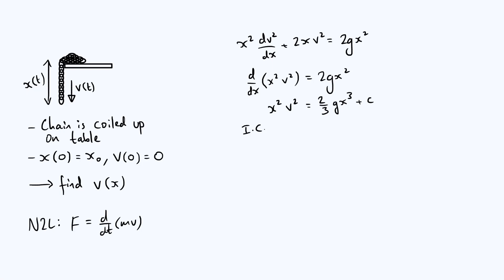At this point we can apply our initial conditions, so we know that v is zero when t is zero, but also x is x₀ when t is zero. And combining those two initial conditions in terms of time together tells you that v is zero when x is x₀. So the left hand side is going to be x₀² times 0², so just zero. The right hand side is going to be ⅔g x₀³ plus c, and that then of course gives you that c is minus ⅔g x₀³.